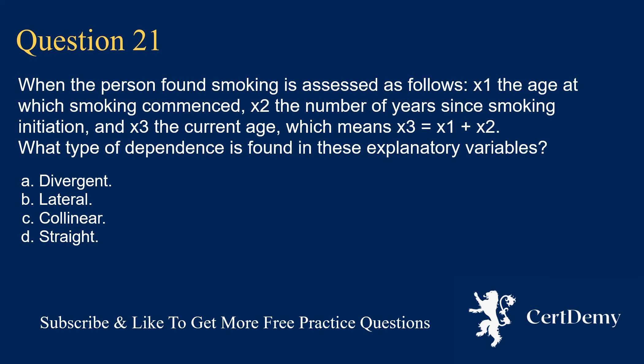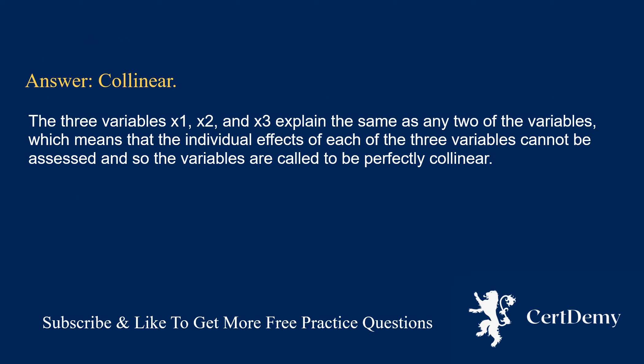Question 21. When a person found smoking is assessed with x1 = age at which smoking commenced, x2 = number of years since smoking initiation, and x3 = current age (meaning x3 equals x1 plus x2), what type of dependence is found in these explanatory variables? Options: divergent; lateral; collinear; straight. The answer is: collinear. The three variables x1, x2, and x3 explain the same as any two of the variables, meaning individual effects cannot be assessed, so they are called perfectly collinear.